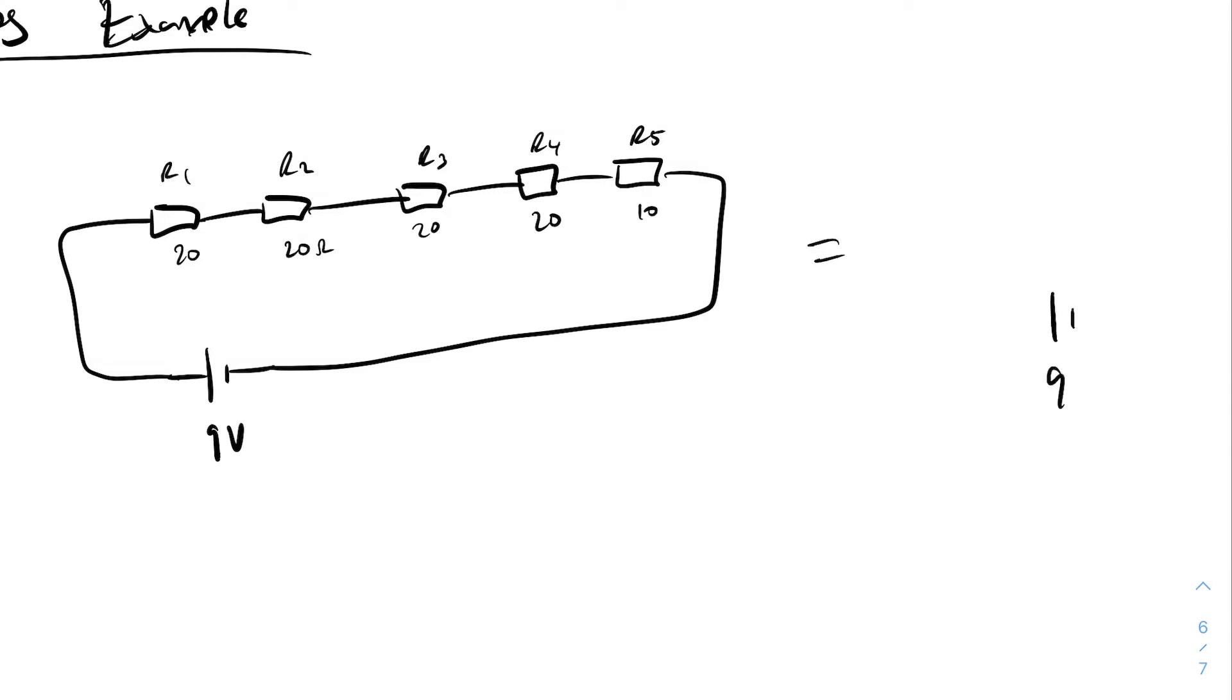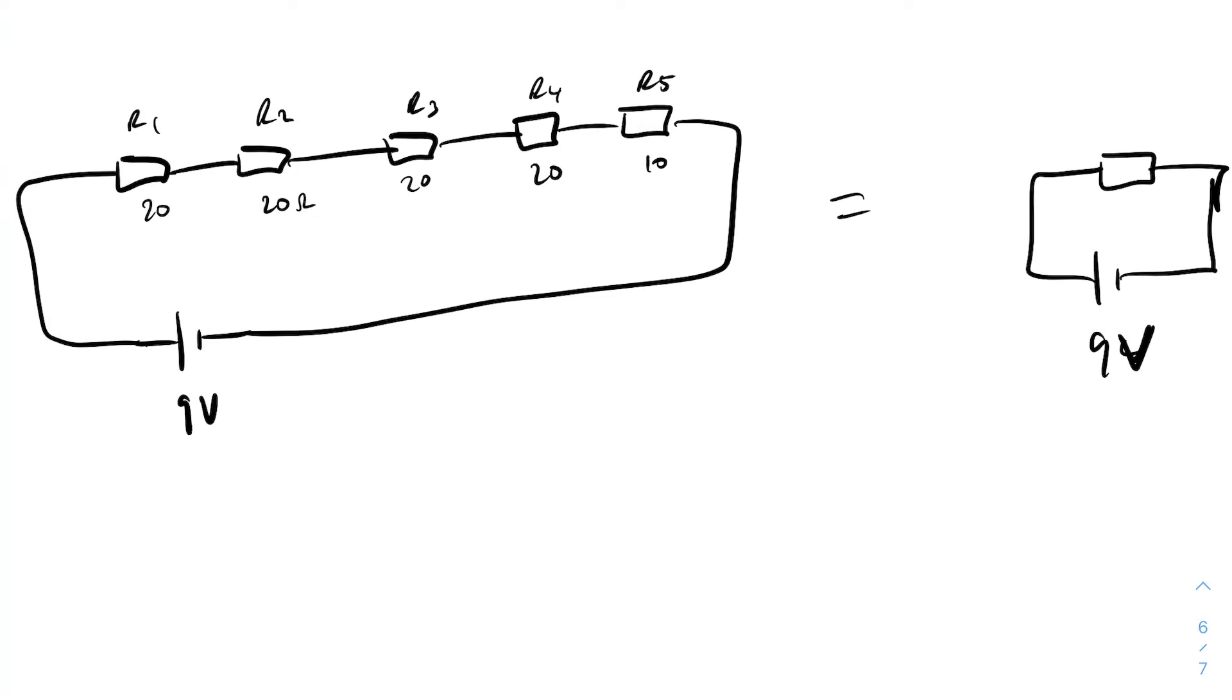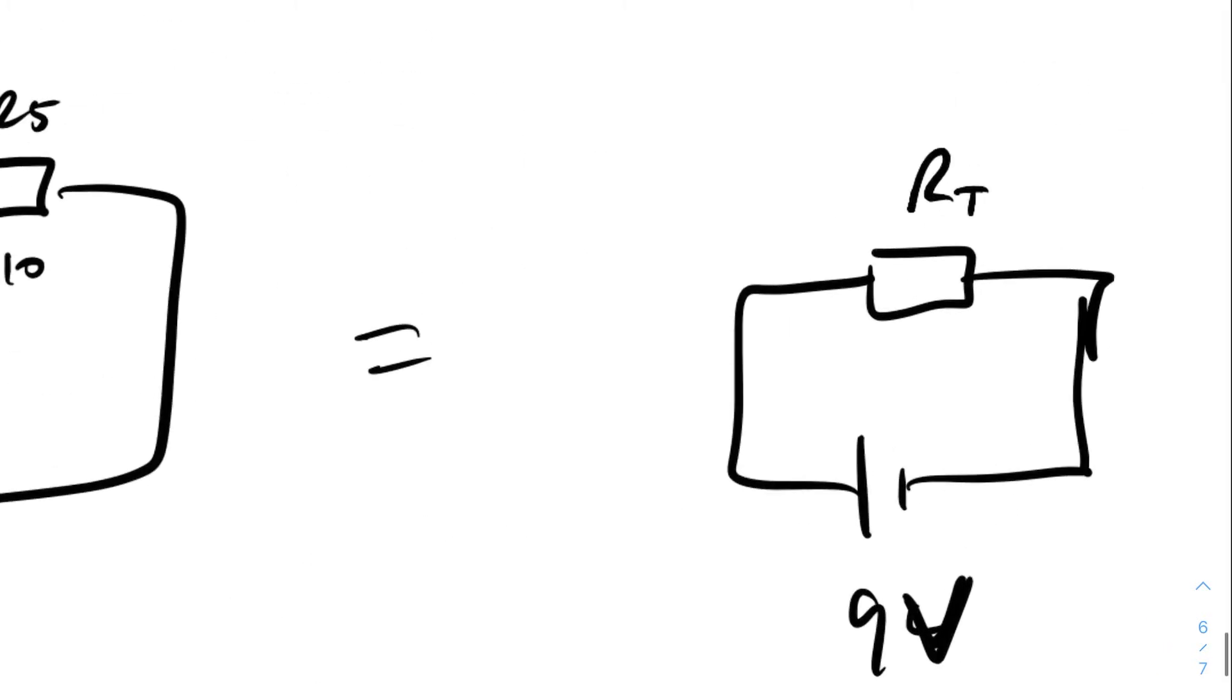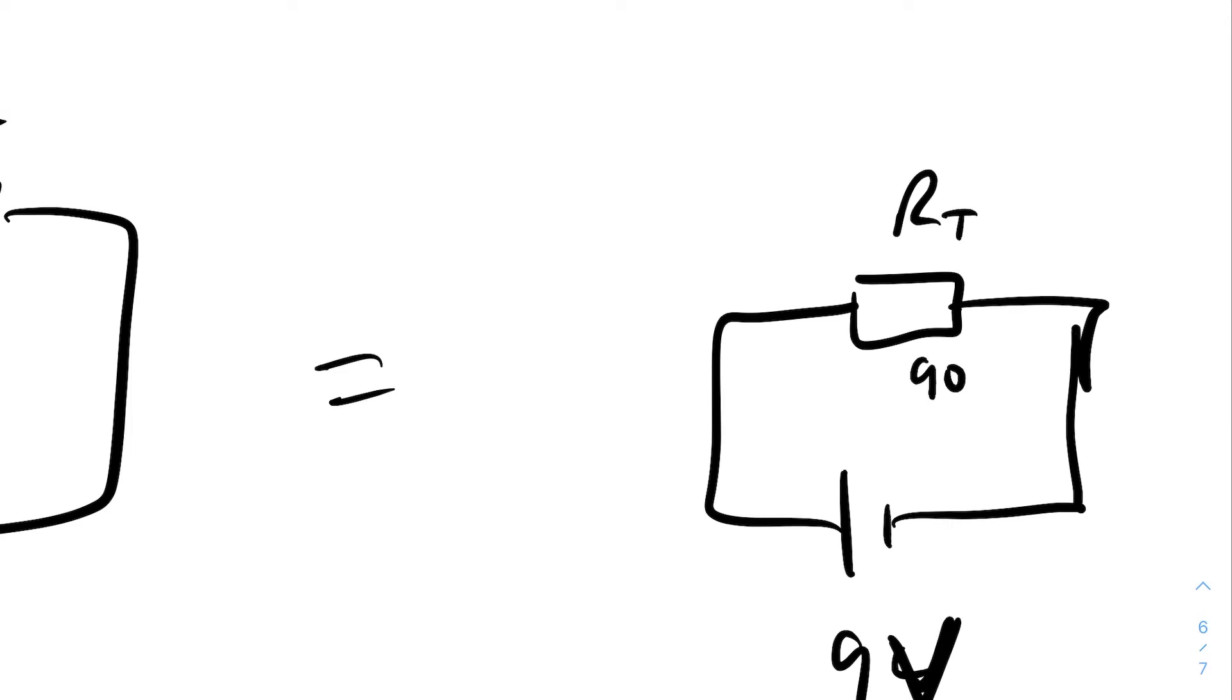So if we wanted to combine all of these resistors, this whole thing would just be equal to the same 9 volt battery and then one resistor here. And what would that value be? Well, you just add them all up with series. So to do it the long way, this one being rt, t standing for total, so rt is equal to r1 plus r2 plus r3 plus r4 plus r5. That means that rt is equal to 20, 40, 60, 80, 90. So rt is equal to 90 ohms.